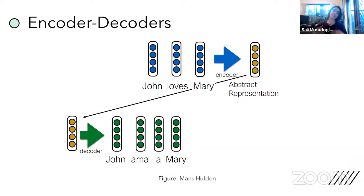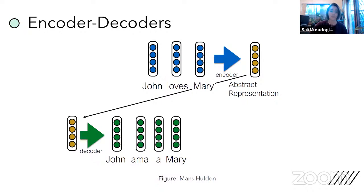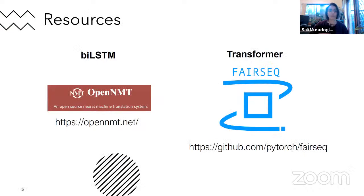More specifically, with encoder-decoders we have some kind of input, we generate an abstract representation, and then we use that abstract representation to decode into something else. This is commonly used in machine translation. There are a lot of resources for us — we have the BiLSTM and the Transformer. Today I'm going to be talking about the Transformer.